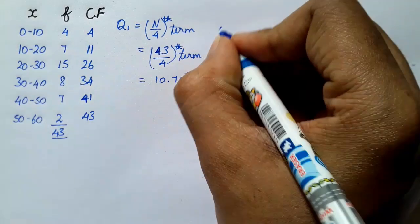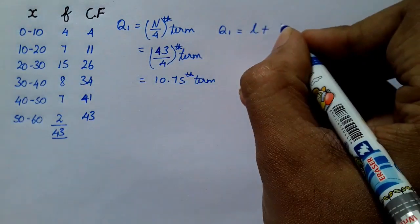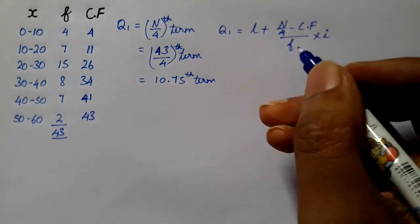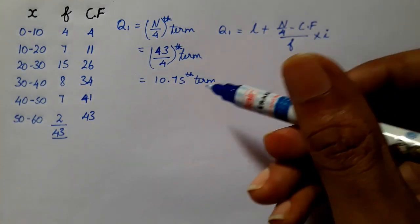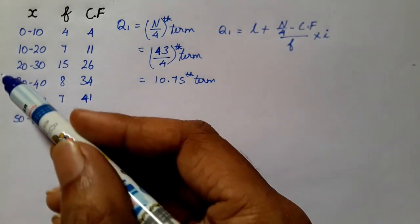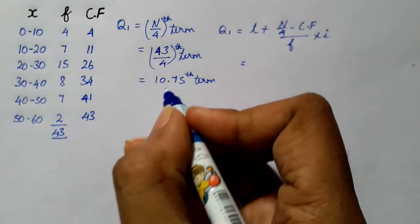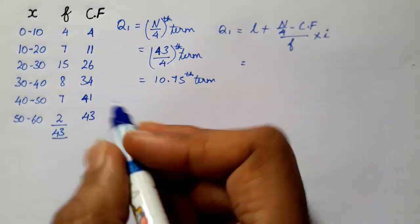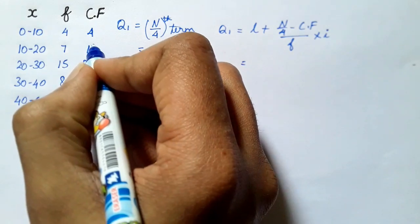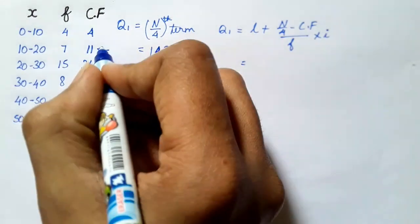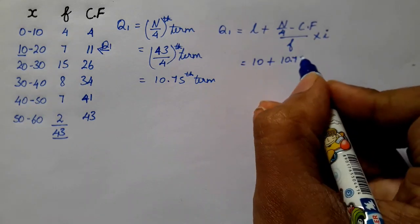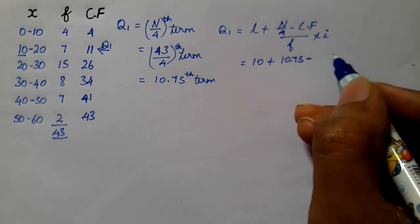Using the Q1 formula: l plus n by 4 minus cf divided by f into i. The value 10.75 is the term. The closer cumulative frequency to 10.75 is 11, so we use that class. The lower boundary l is 10, n by 4 is 10.75, and cf is 4. So: 10 plus 10.75 minus 4.